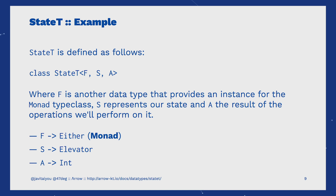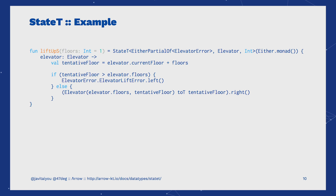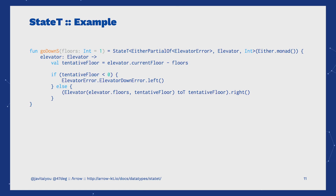Let's see the new implementation for these methods using this monad transformer. Notice the function signature on both of them. Our updated operations work in the context of StateT with the following type parameters: an Either able to return ElevatorError, Elevator as our state, and Int. The body of our function, that takes the current state of the elevator as an input, is basically the same as in the previous examples, as we work with Either types to return errors or correct results. The same is applied to our go down operation. Notice how we haven't had to change anything in our implementation of the operation to work with a monad transformer like StateT.